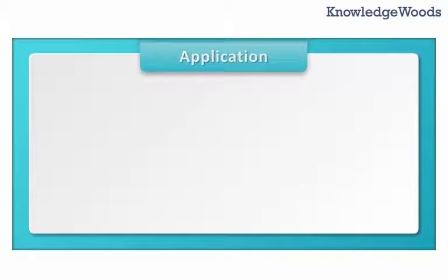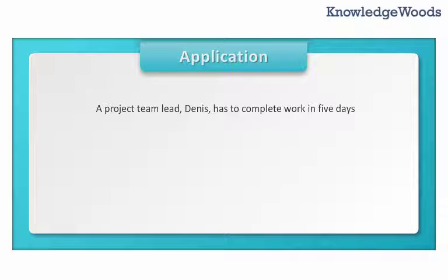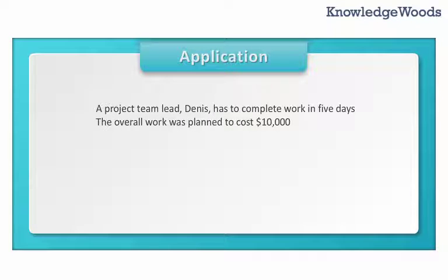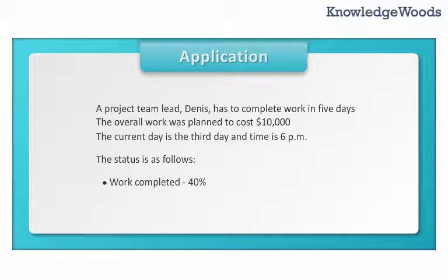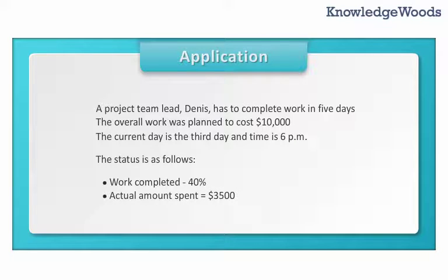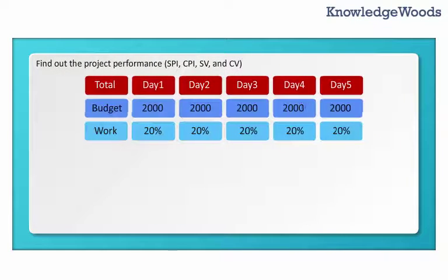Application. A project team lead, Dennis, has to complete work in five days. The overall work was planned to cost $10,000. The current day is the third day and the time is 6 p.m. The status is as follows: work completed is 40%, and the actual amount spent is $3,500. Find out the project performance.